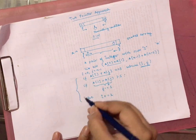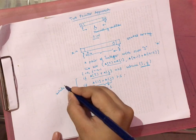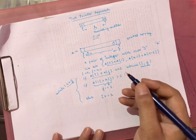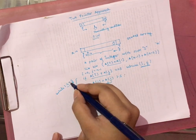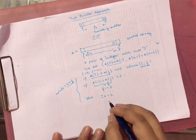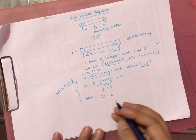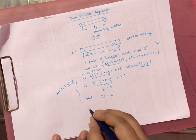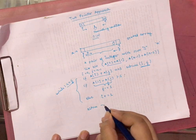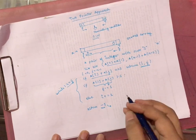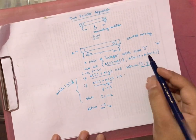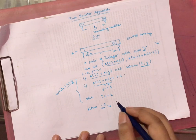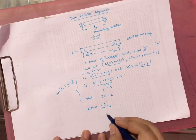We do this while i is less than or equal to j. When the loop terminates, if no pair is found we return -1, indicating we can't find two elements with the sum S. This is the opposite directional two pointer approach.